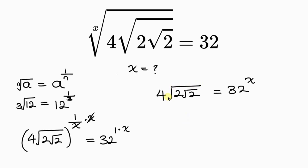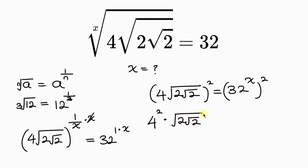Our next step is to get rid of the outer square root by squaring both sides. On the left, the square affects the 4 and the outer square root, giving 4 squared times the quantity square root of 2 times square root of 2, all squared. On the right, the powers multiply, giving 32 to the 2x. Simplifying, 4 squared is 16, and the square cancels the square root, leaving 16 times root 2.